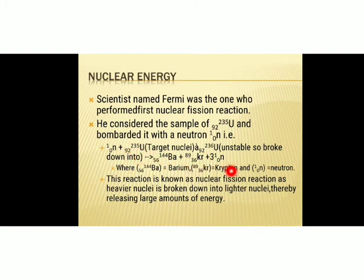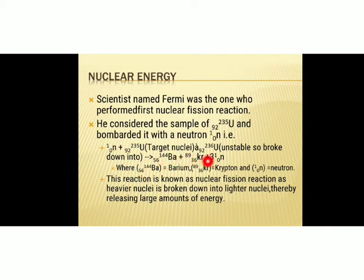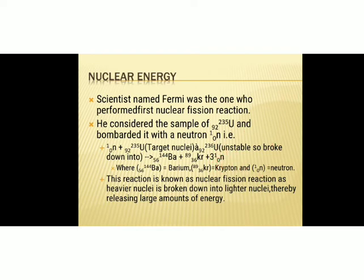Since uranium-236 is unstable, it very soon splits into two lighter nuclei: barium (₅₆Ba¹⁴⁴) and krypton (₃₆Kr⁸⁹), along with three neutrons. So when one neutron is bombarded with uranium-235, you first get unstable uranium-236, which then splits into barium and krypton along with three neutrons. This is a nuclear fission reaction.